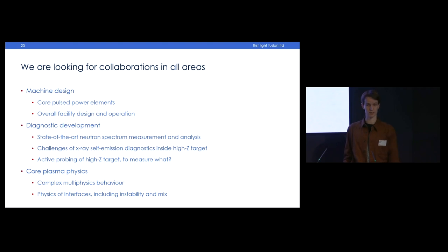We've been prototyping using Bayesian inference with a Neutronics model, a Monte Carlo Neutronics model, in the loop of the Bayesian inference. I think we've got enough proof of concept to show that can work and can recover meaningful information like ion temperature at lower signal levels or with different detectors than you might think. There's some big challenges around X-ray self-emission diagnostics - things inside a big high-Z target, so how are you going to get the X-rays out? And then active probing I've already flagged - it's inside a high-Z target, and to measure what has to be the question. So what source to measure what? We're also very interested in collaborations on the core plasma physics - anything with complex multi-physics behavior where you have strong coupling between hydro and radiation behavior. And the physics of interfaces in its broadest sense - instabilities, mixing, kinetic processes of heat conduction between different ion species mixing into each other.